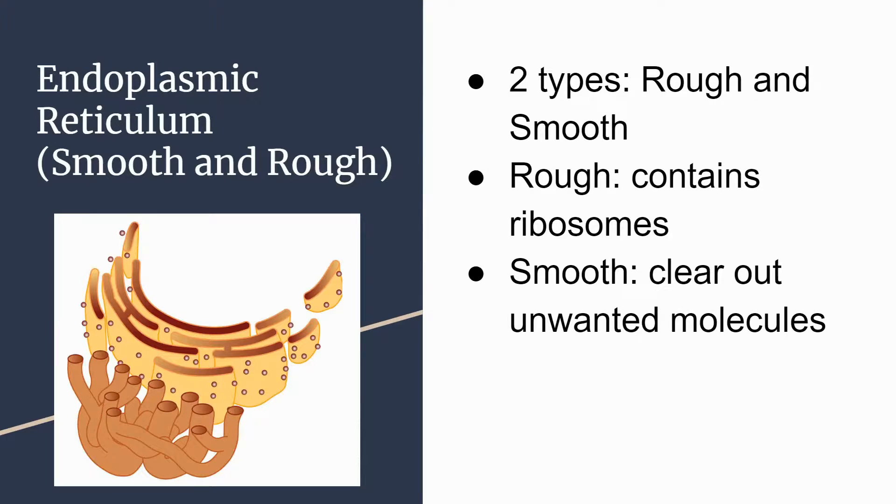The endoplasmic reticulum, or the ER, has two different types: the rough and the smooth ER. The rough ER has ribosomes embedded into the membranes and gets proteins ready to move to other parts of the cell, while the smooth ER's main purpose is to get rid of harmful molecules that are unhealthy for the cell and that might damage it.